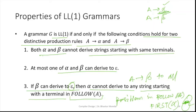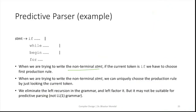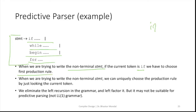Trying to write a non-terminal statement. This is an example of a simple grammar statement. You can see if-statement, while-statement, begin-statement, and perform-statement. They are all starting with different keywords. So if the current token is 'if', we have to choose the first production rule. If we find that it is starting with 'if', we know we have to choose the first production rule.